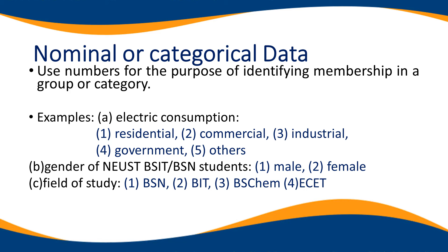Ito, madalas natin nakikita sa mga forms — pipiliin mo lang doon. If you are categorized to number one, pipiliin mo residential. If you are categorized for commercial, pipiliin mo ang number two. Next is gender — pipiliin mo doon. Halimbawa, number one is for male, number two is female. Yan yung tinatawag na categorical data.